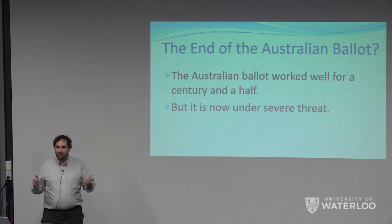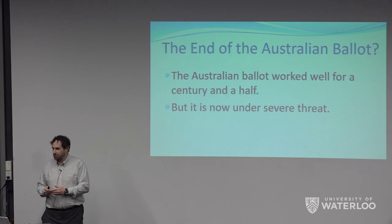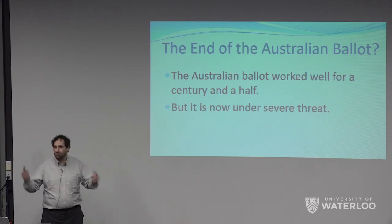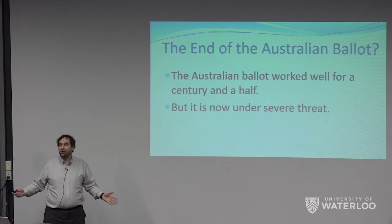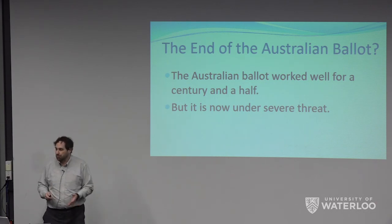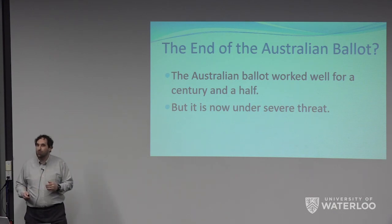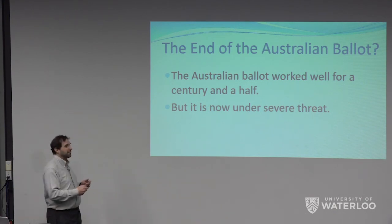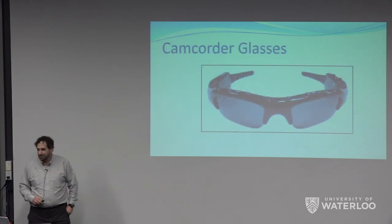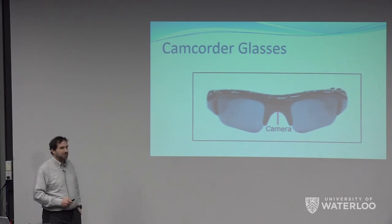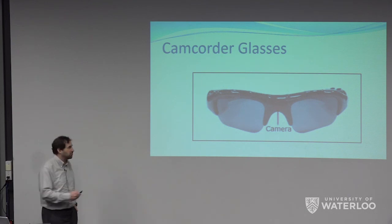Also there's a threat because a lot of people are pushing Internet voting. If you're voting from home, even if you've solved every other problem, you still have the coercion problem. But even with these problems, there's one more issue you might not think of immediately. These are camcorder glasses — a little camera embedded in the bridge of the nose. One particular brand: five hours of video recording, under 20 bucks.